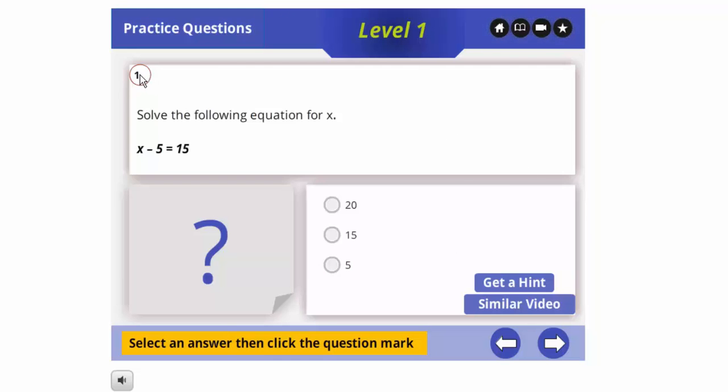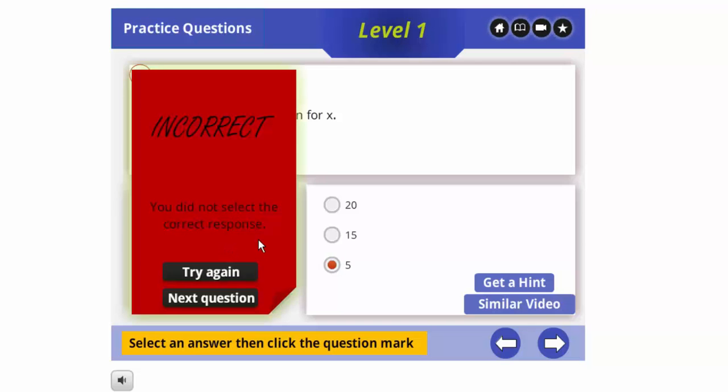So what we have is the number of the question we're on, the levels up here, and the actual question. In this case, we're asked to solve for x, and what we're going to do is, once we've got the answer—maybe you were marking it off on a paper off to the side—once we think we have the answer, we'd pick. Maybe I think the answer is five. Well, I pick five, and then as it tells me down here, I would select a question mark or select an answer, click the question mark. So once I've picked an answer, I click this. Oh, and unfortunately I got it wrong. In this case, I guess I should have taken more time to do the question.